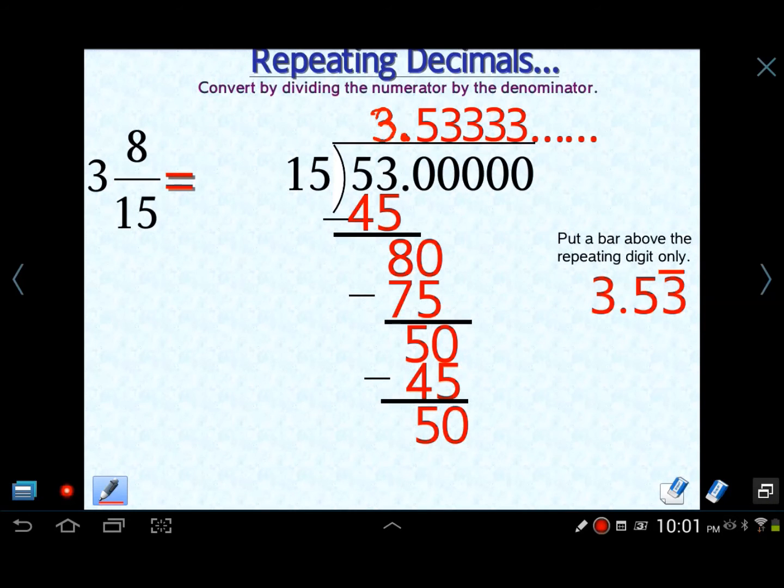So here's the next one: three and eight fifteenths. Now when you have a mixed number, you can always change it to improper. So fifteen times three is forty-five. And then don't forget to add the top number, the numerator. Forty-five plus eight is fifty-three. Fifty-three fifteenths. That's what you get.